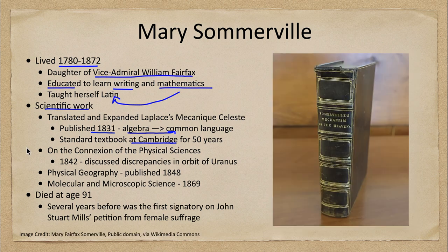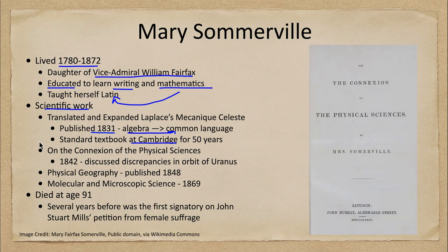She also did work on another book on the connection of the physical sciences. In 1842, this work was discussing discrepancies in the orbit of Uranus.